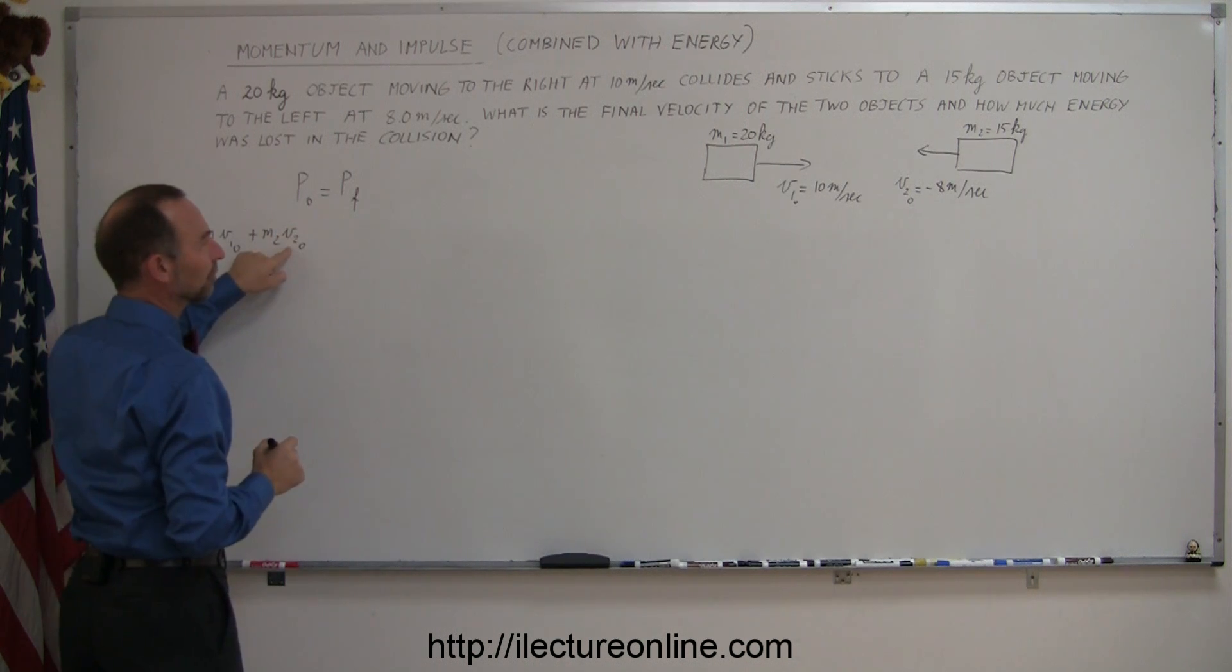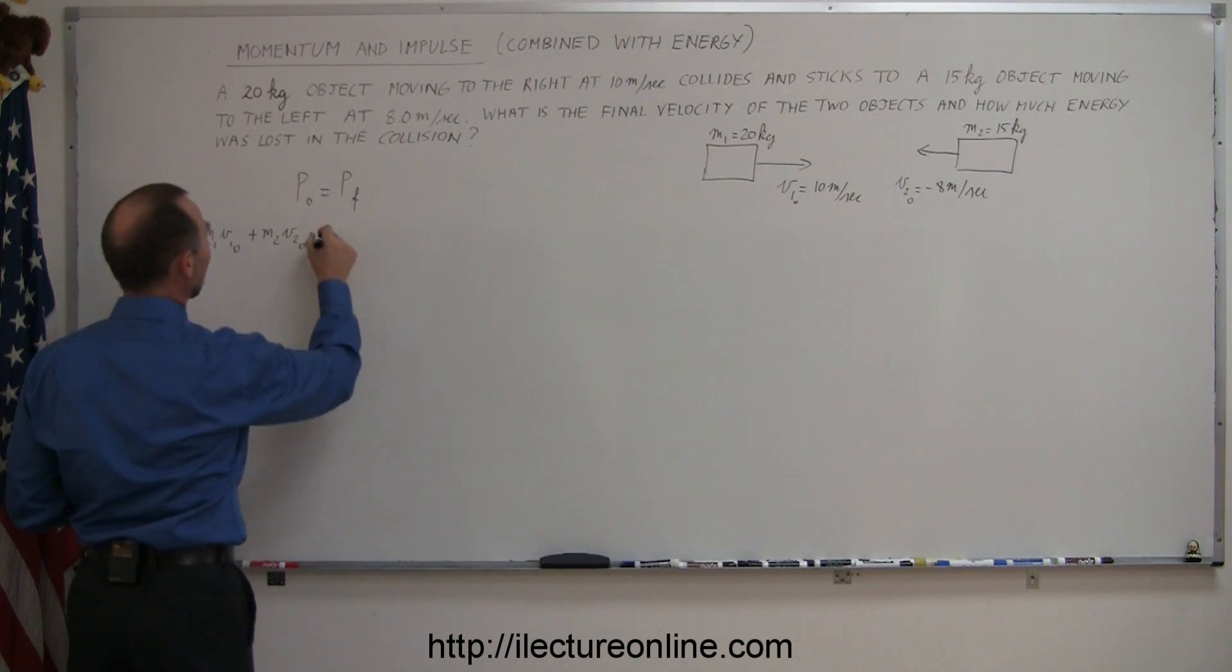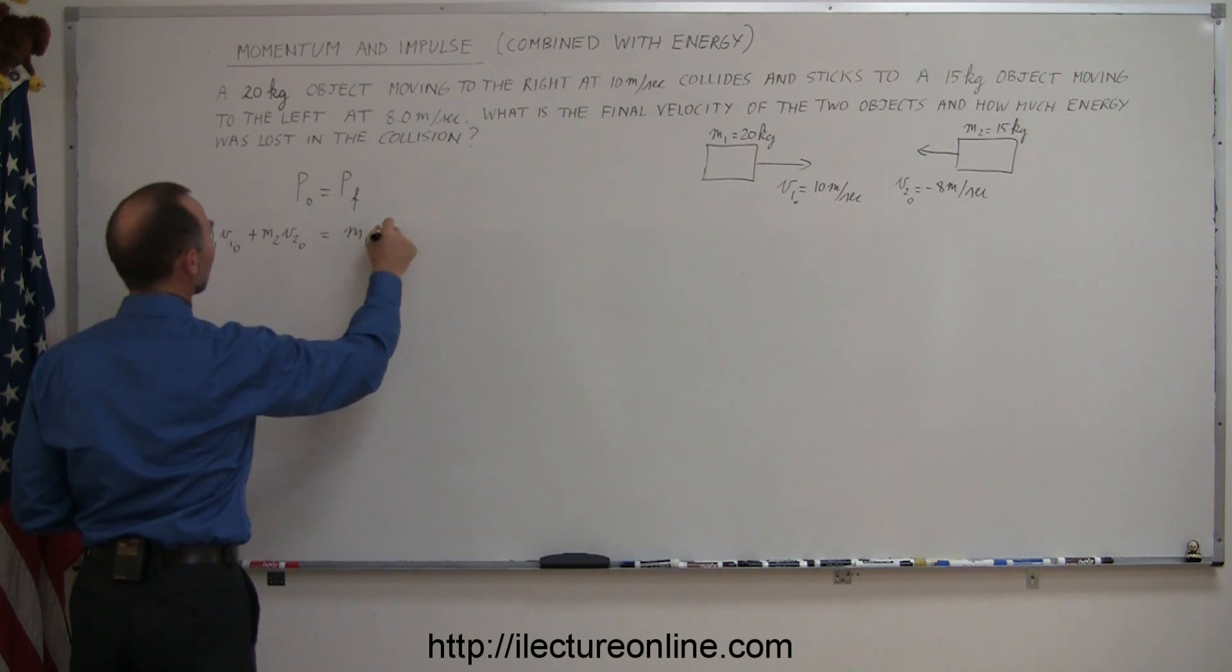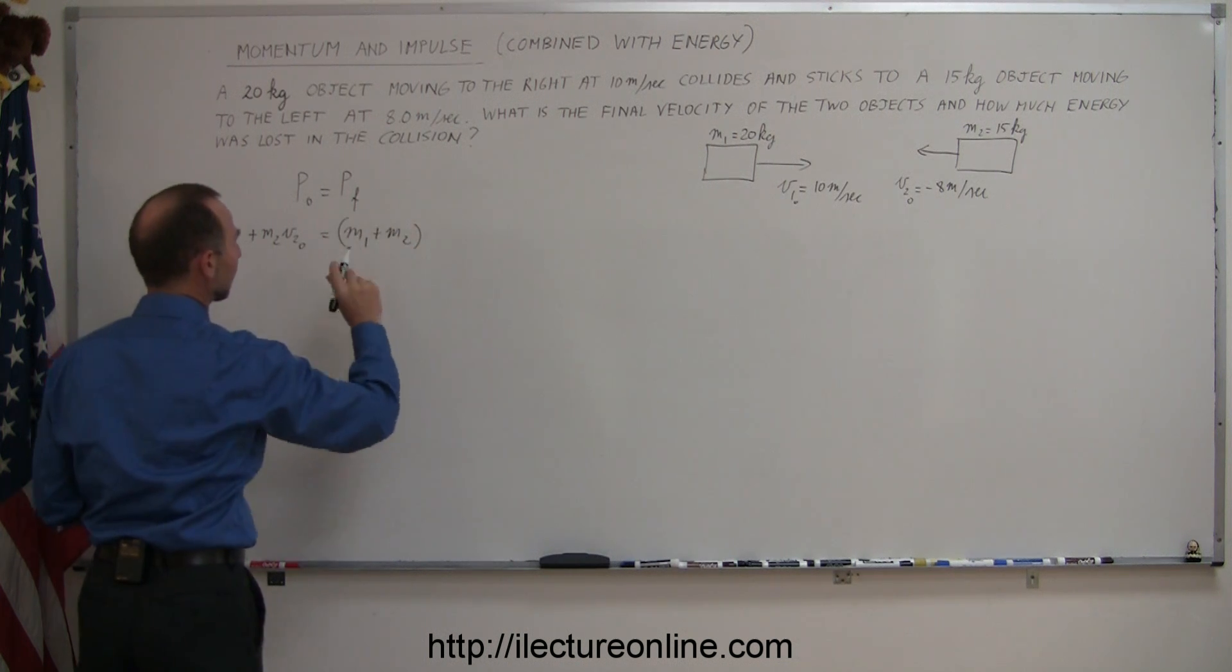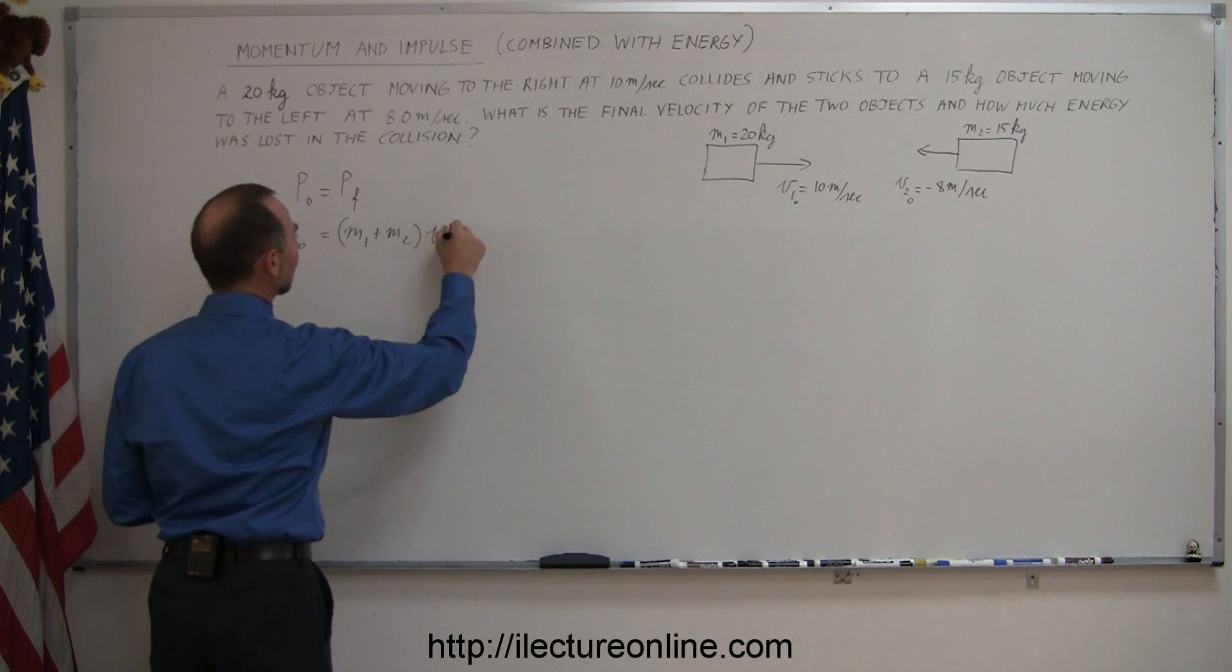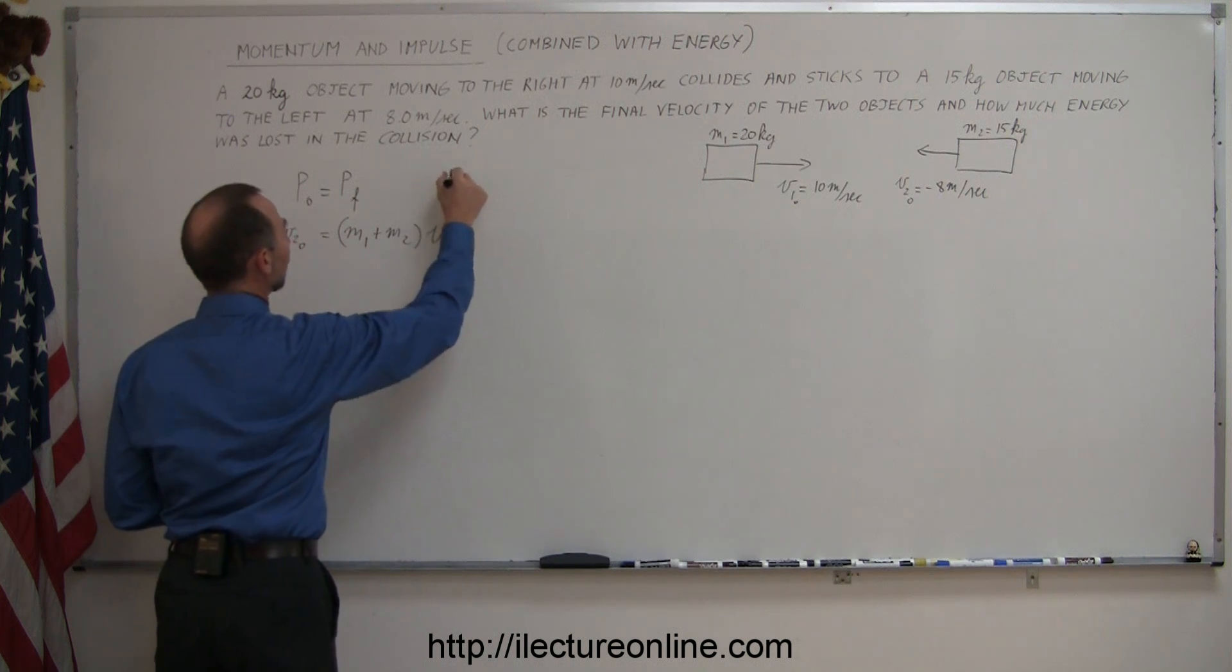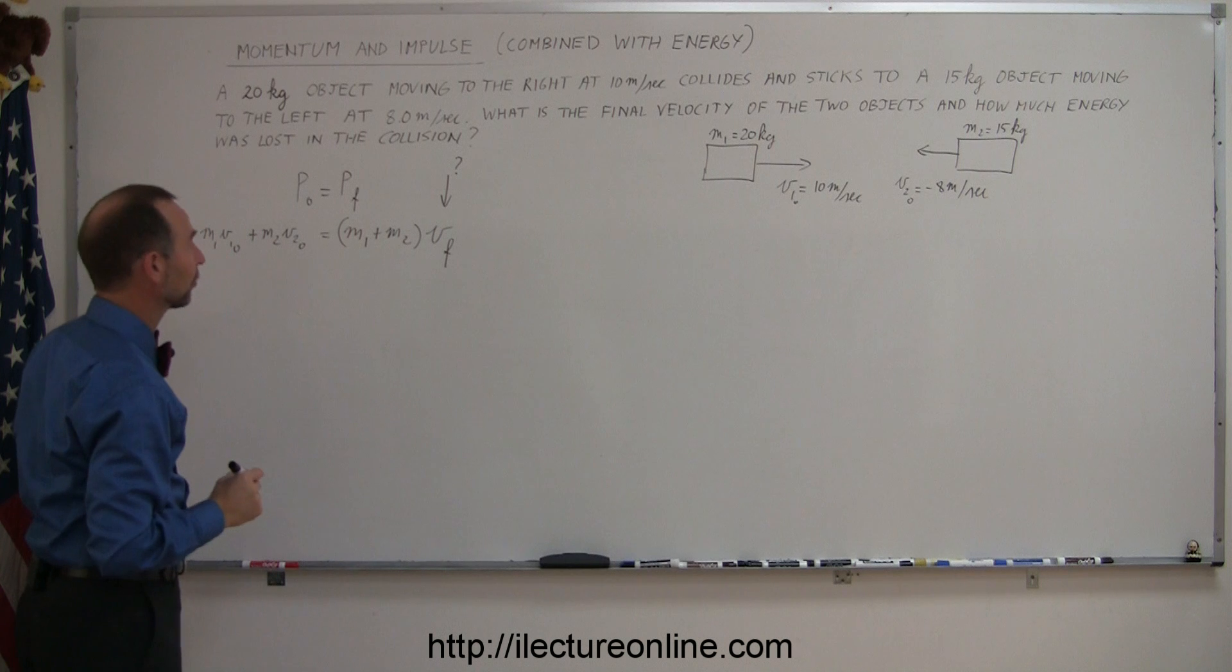So the initial momentum is M1 V1 initial plus M2 V2 initial, understanding that V2 is a negative quantity. And that equals M1 plus M2, because they stick together, it's an inelastic collision, times V final. So the first thing we're going to do is figure out what that final velocity is.